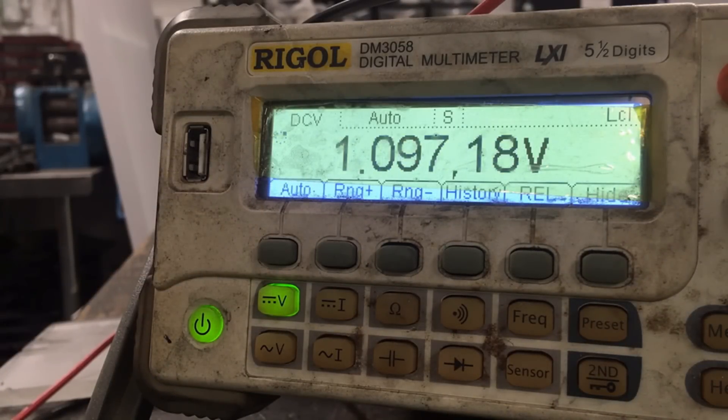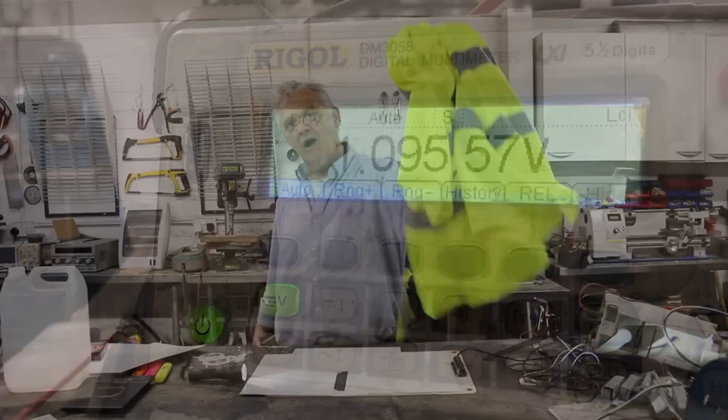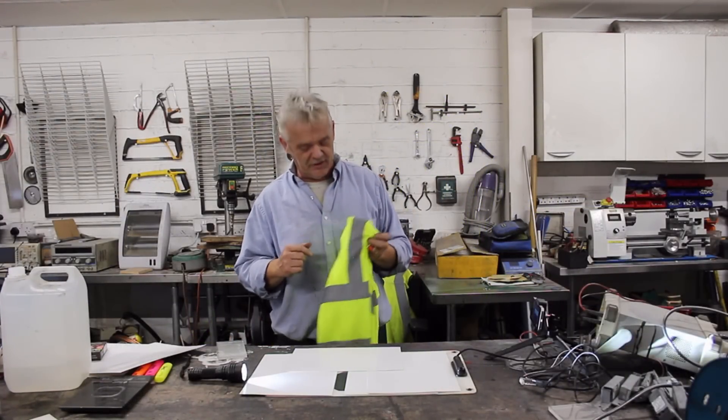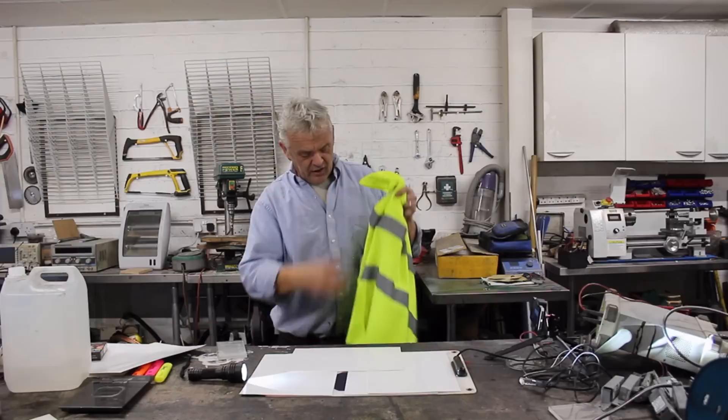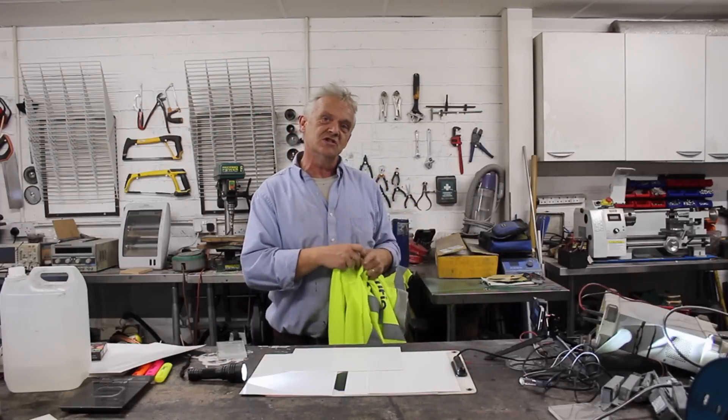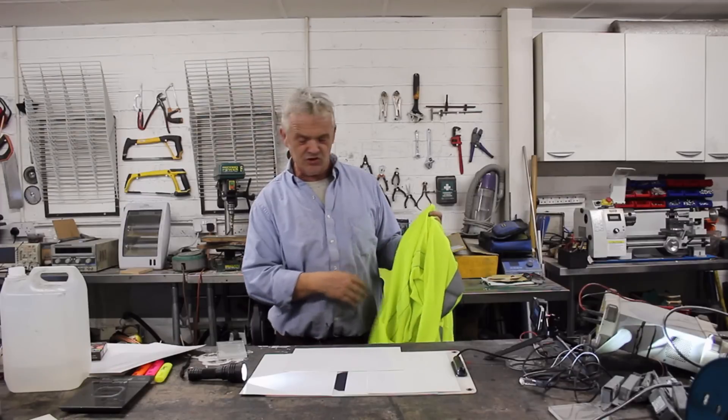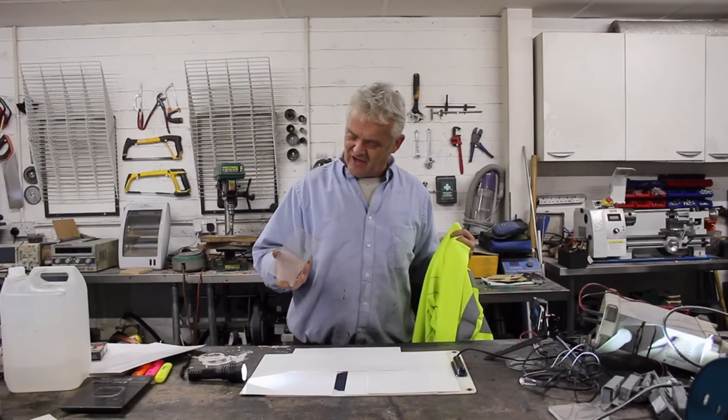Now what I've got here is a safety shirt. This particular safety shirt's got two elements, it's got these reflective strips on it but the yellow here is actually a fluorescent dye, it's been dyed with a yellow fluorescent dye. And if we put that together...